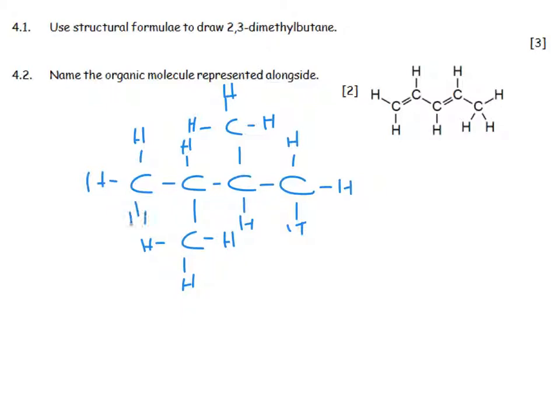Name the organic molecule represented alongside. 1, 2, 3, 4, 5 carbons in my longest carbon chain. There is a double bond on carbon number 1 and on carbon number 3, so it's going to be pent-1,3-diene. The diene is the two double bonds in there.